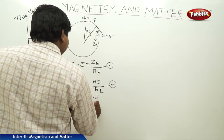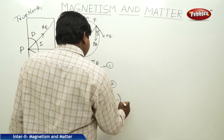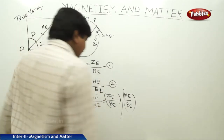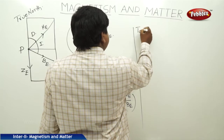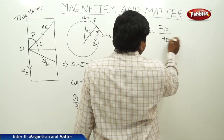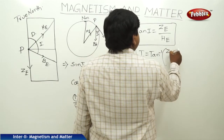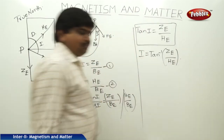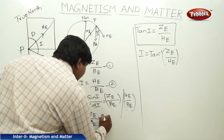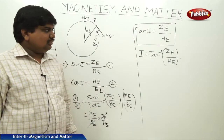sin I / cos I is equal to ZE/BE. If we simplify this equation, we get sin I / cos I = tan I = ZE/HE. This comes from ZE/BE multiplied by BE/HE — BE cancels out — leaving ZE/HE. That is why we write that as the final equation.